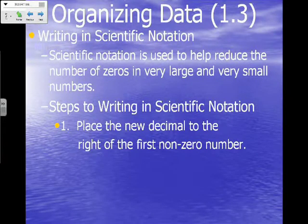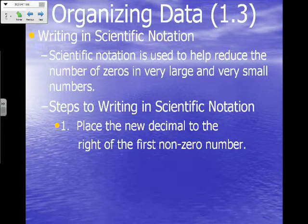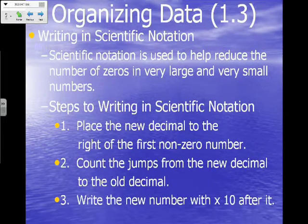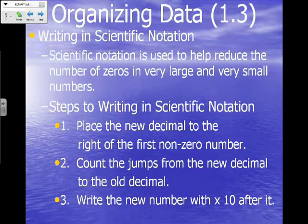Number one: place the new decimal to the right of the first non-zero number. These steps may not make sense right now, but we're going to use them in just a moment when we practice, so it's important that you write them down. The second step is to count the jumps from the new decimal to the old decimal.